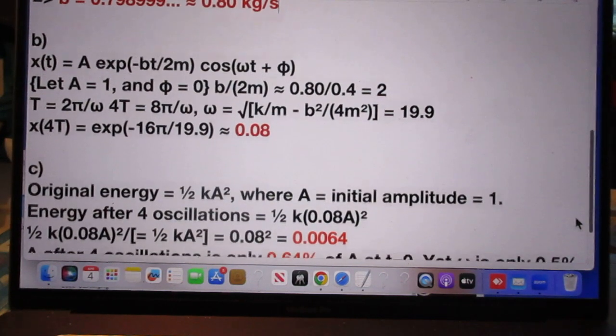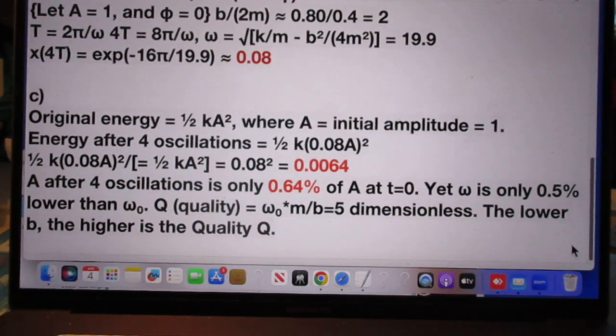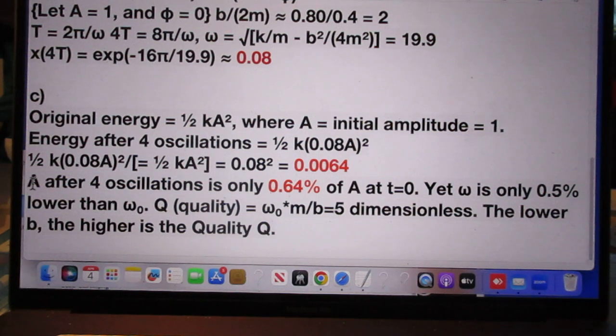I'm going to make a comment on C that he did not make. So the amplitude after 4 oscillations is only about half a percent of the amplitude at t equals 0. So there is not much left, yet omega is only half a percent lower than omega 0.